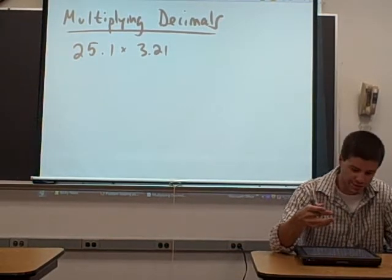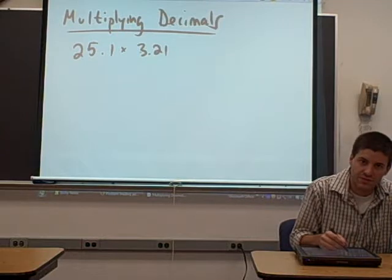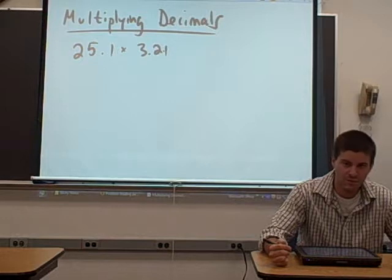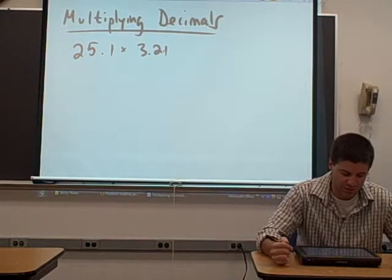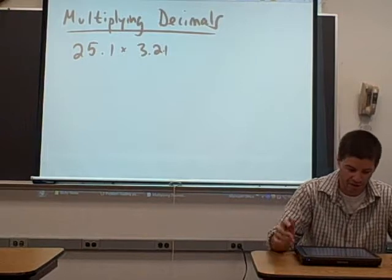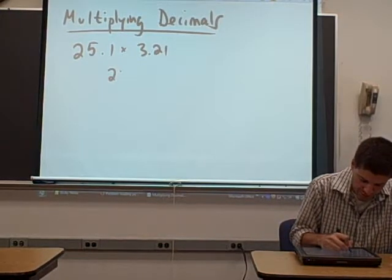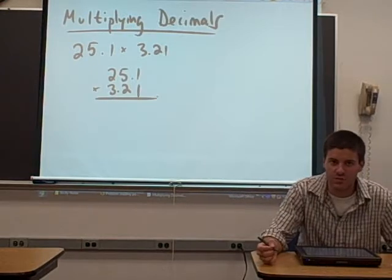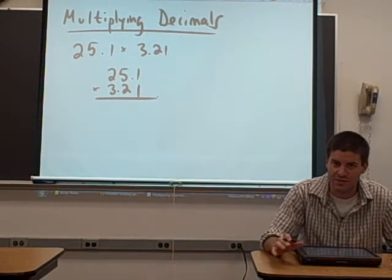So let's take a look at an example: 25.1 times 3.21. Let's try to multiply those two decimals. The first step is multiplying these two numbers and just ignoring that the decimals are even there. The way we would multiply these two numbers is we would line them up like that and we would multiply. Now just ignore that the decimal point is even there.